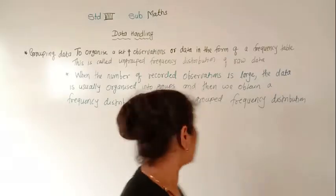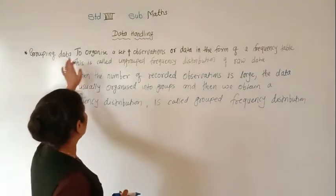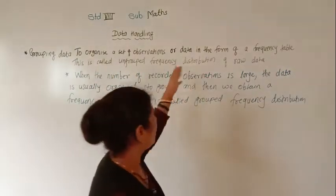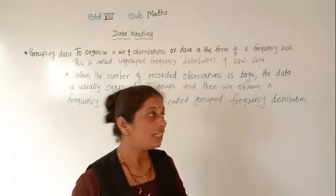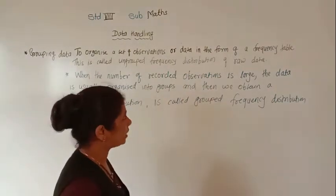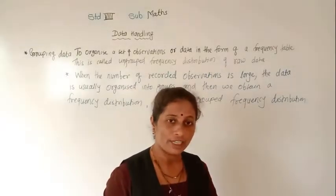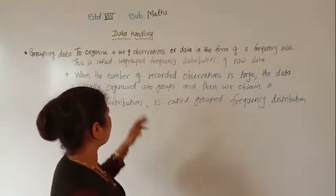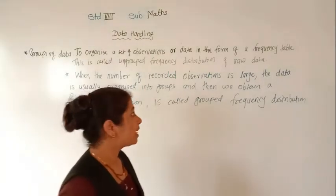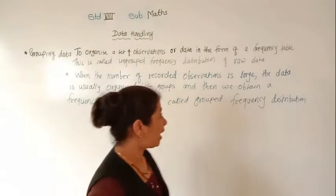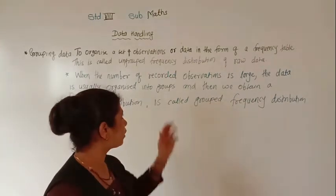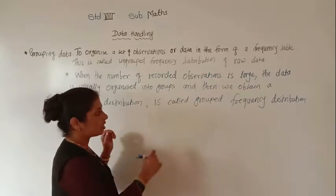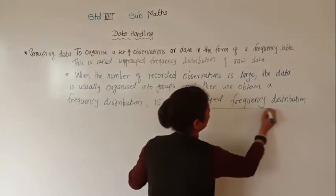To organize a set of observations or data in the form of a frequency table is called the ungrouped frequency distribution of raw data. When the number of recorded observations is large, the data is usually organized into groups, and then we obtain the frequency distribution called grouped frequency distribution.